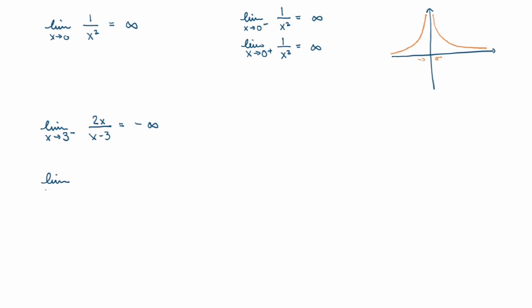For the limit as x goes to 3 from the right of 2x over (x−3), the numerator still goes to 6. But now x is just a tiny bit bigger than 3, so x minus 3 is a very small but positive number. So we get 6 over a very small positive number, giving plus infinity. The two one-sided limits are not the same, so the limit as x goes to 3 does not exist.